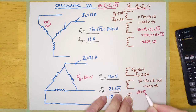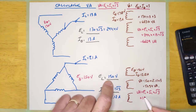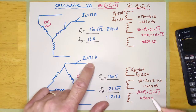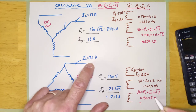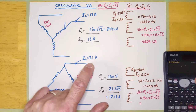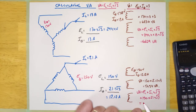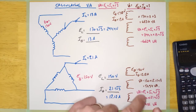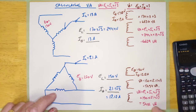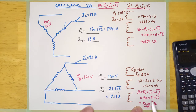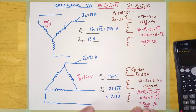Same with the Delta system. VA = E_line × I_line × root 3. E_line is 150, I_line is 21, times root 3. That gives 5,456 VA — close enough, just a little bit of rounding. Both formulas calculate the correct VA.